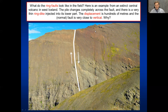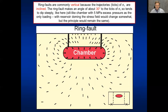Why are ring faults so often close to vertical? When a shear fracture forms it makes an angle of roughly 20–30 degrees to the maximum principal compressive stress sigma one. Around the magma chamber, sigma one is inclined rather than vertical, so the resulting shear fracture becomes close to vertical. The fault can dip inward — a normal ring fault — or outward — a reverse ring fault.